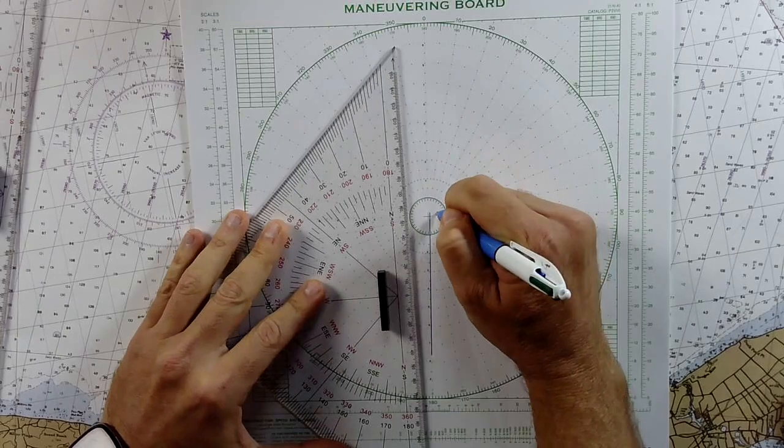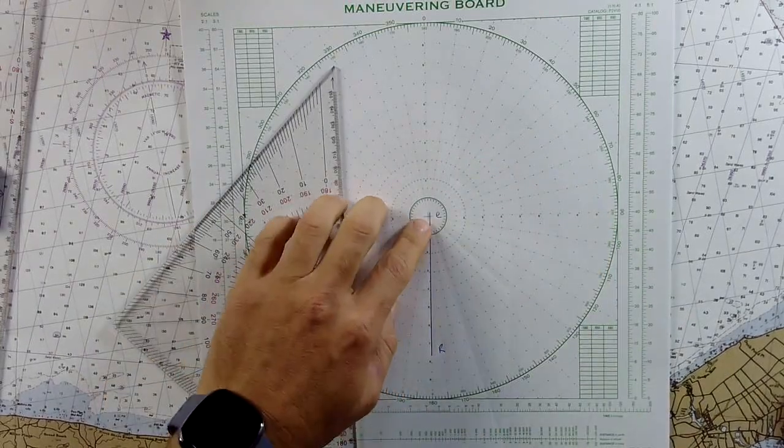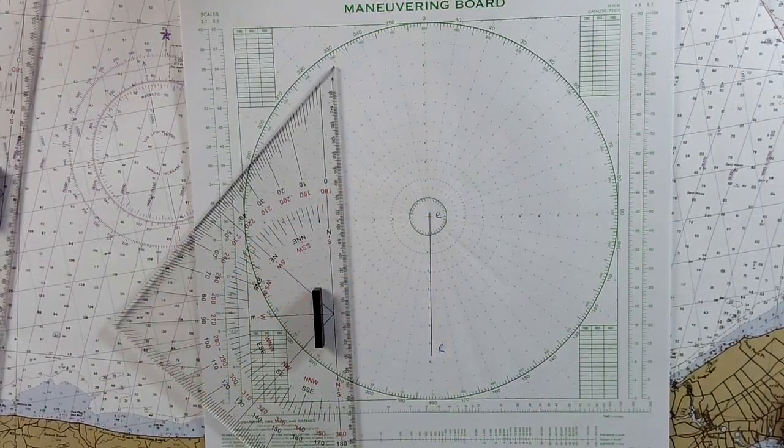So that represents E to R. And you can remember this as E to R is our course and speed.